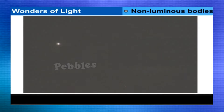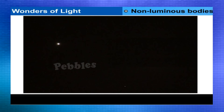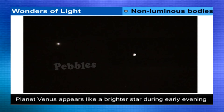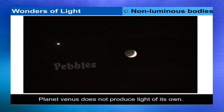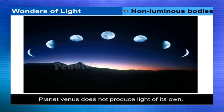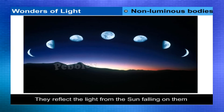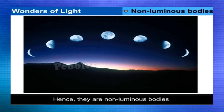The Moon and planets are non-luminous bodies. Planet Venus appears like a bright star during early evening, but light does not come from it. The simple reason is that it does not produce light of its own; instead, it reflects the light from the sun falling on it. Hence, it is a non-luminous body.